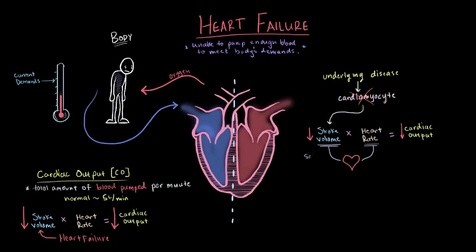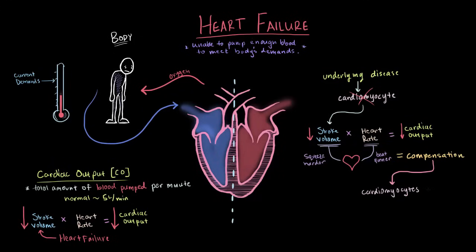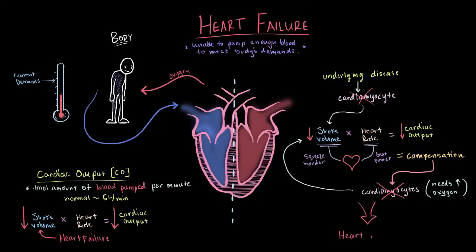When cardiac output goes down, the heart has two options to increase it again: increase stroke volume by squeezing harder, or increase heart rate by beating faster. This is called compensation. In early stages of heart failure, these methods can help compensate for decreased supply. But over time, those surviving muscle cells become overworked and need more oxygen — and since decreased oxygen supply is the core issue, more muscle cells die off, stroke volume drops further, and the whole cycle repeats, causing heart failure to get worse and worse.